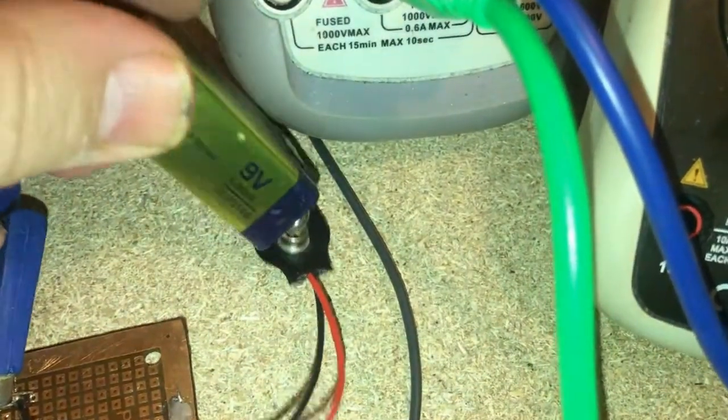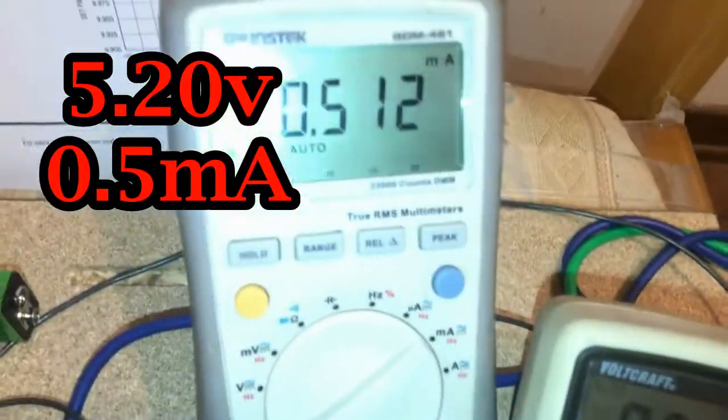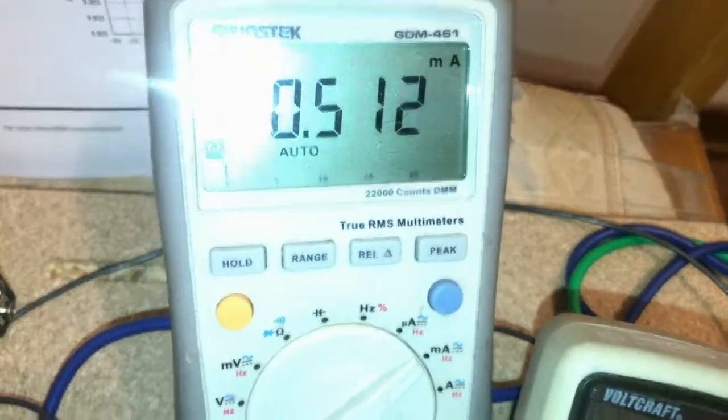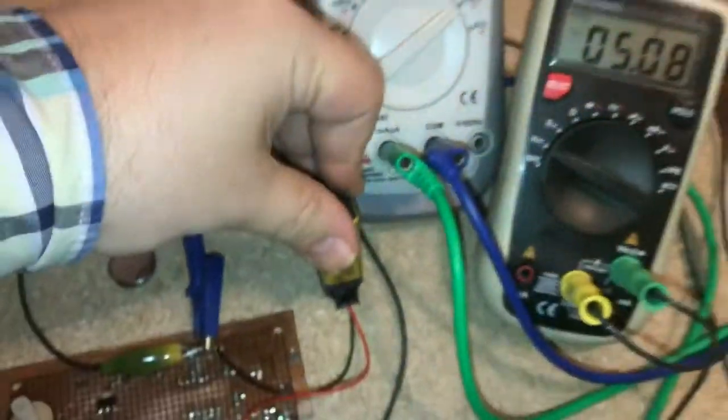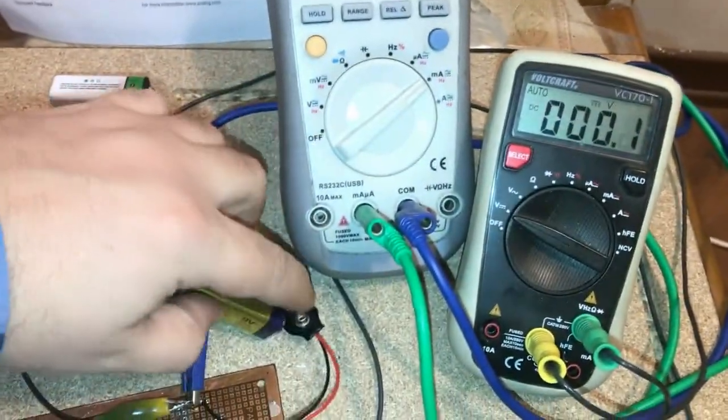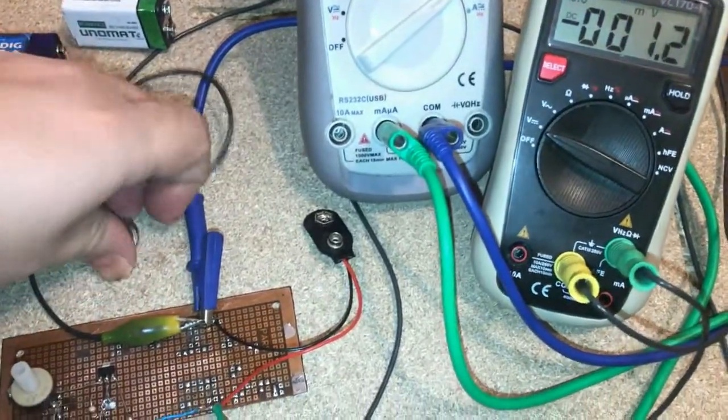It should be something like 5 volts. Yeah, and the current is still 0.51 milliamps. And now I'm going to test with the coin battery.